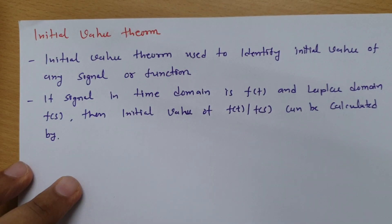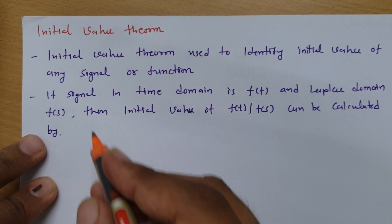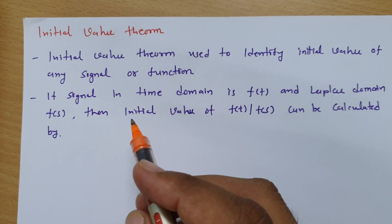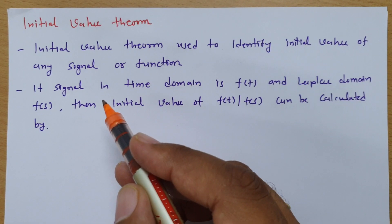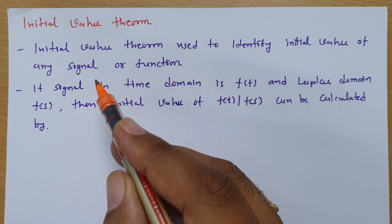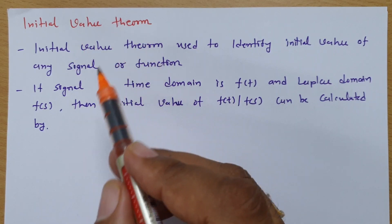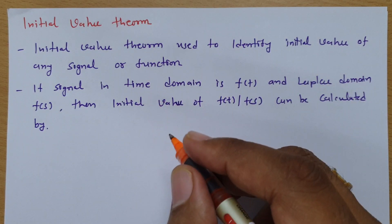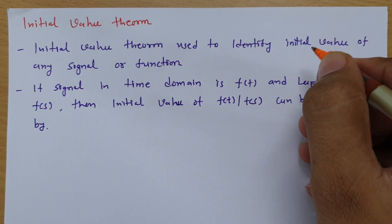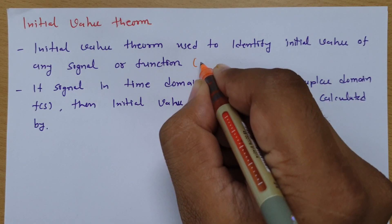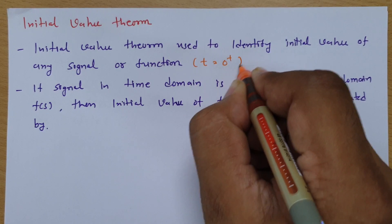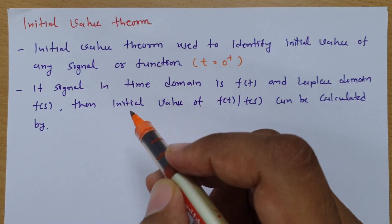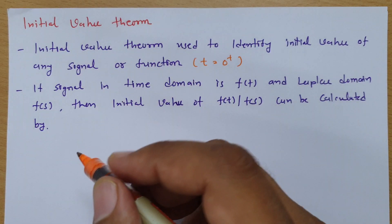Welcome to the Signal and System lecture series. In this session I will explain the initial value theorem. The initial value theorem is used to identify the initial value of any signal or function — specifically the value of the signal at time t equals 0 plus.